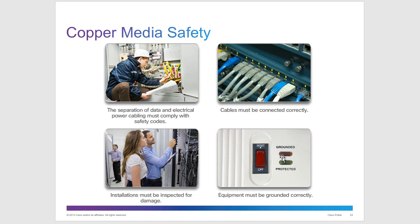For copper media safety, the separation of data and electrical power cables must comply with safety codes. Cables must be connected correctly. In a network setup, colored cables often mean something — whether a cable is a crossover or straight-through — though there's no set color scheme. Installations must be inspected for damage, and electrical equipment must be grounded correctly.